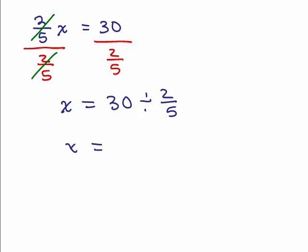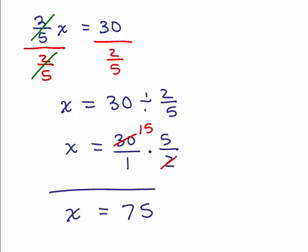And then, division with fractions, I'm going to multiply by the reciprocal. So, 30 times 5 halves, and then you'd have to cancel, and finally, you do get 75, which I think is the correct answer.